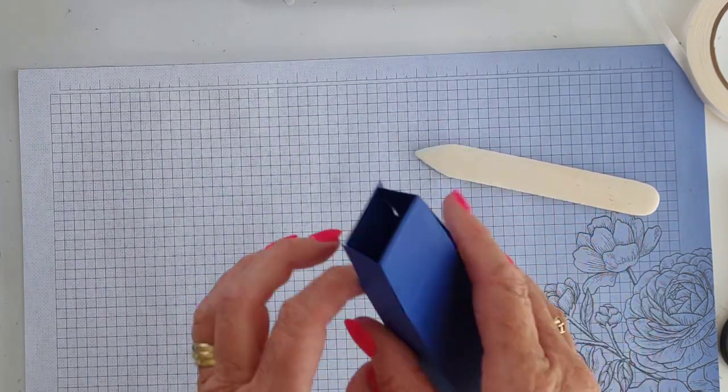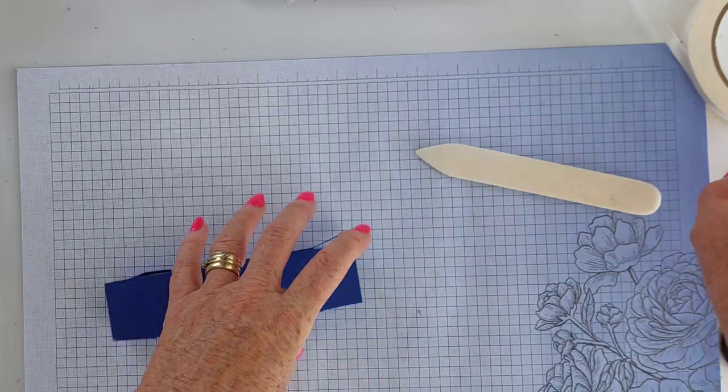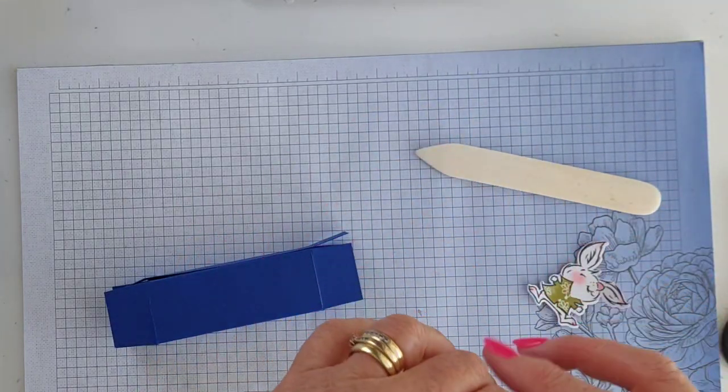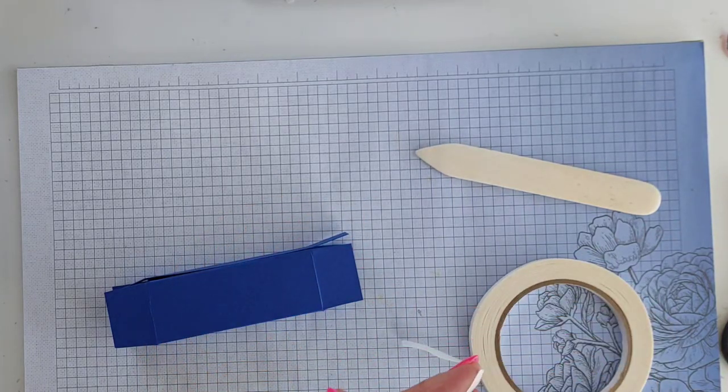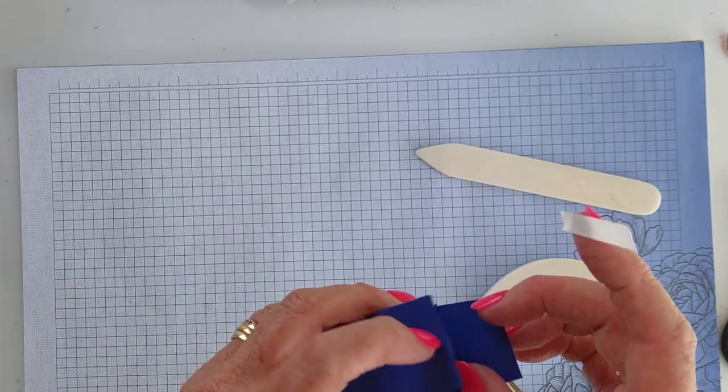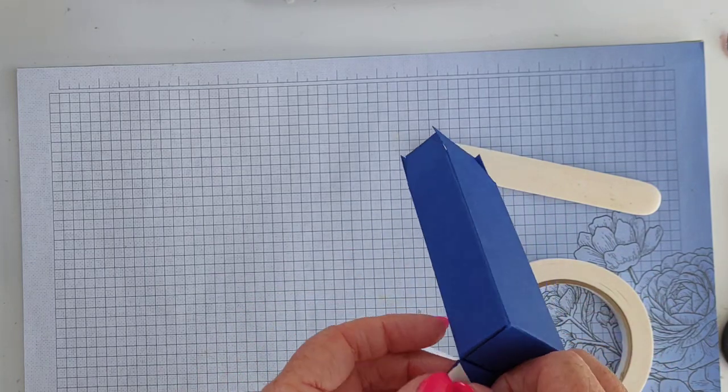And that will become now the back of the box. So fold up the bottom pieces, put some tape over there.